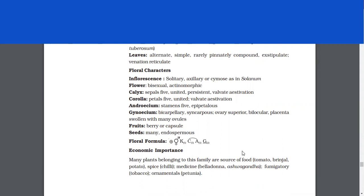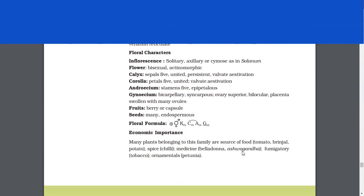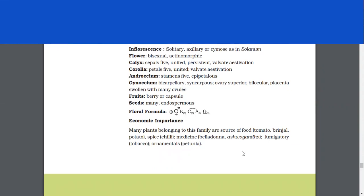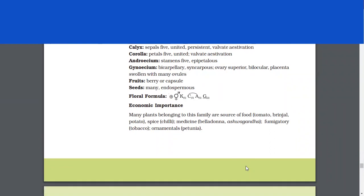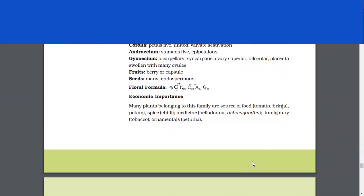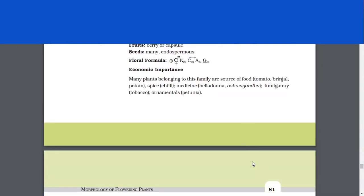Androecium, stamens 5, epipetalous. Gynoecium, bicarpellary, syncarpous, ovary superior, bilocular, placenta, swollen with many ovules. Fruits, berry or capsule, seeds, many endospermous. Economic importance. Many plants belonging to this family are source of food, spice, medicine, ornamentals or fumigatory.